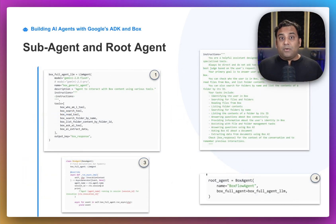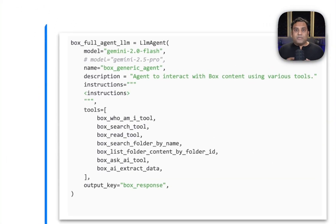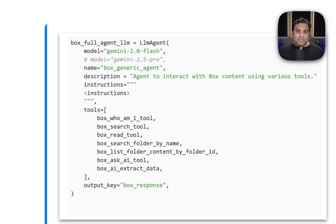So you've just seen how to create the foundational tools that connect our agent to Box. Now, let's look at how we assemble them into a complete functioning agent — the sub-agent and the root agent. First, let's focus on the sub-agent. This is an LLM agent which acts as the intelligent core of our operation. It's where we combine powerful large language models with the practical tools we just built. You can configure it with multiple options — for example, a model like Gemini 2.0 Flash, or the latest ones, Gemini 2.5 Flash or Pro models — a name for identification, and most importantly, the tools list.